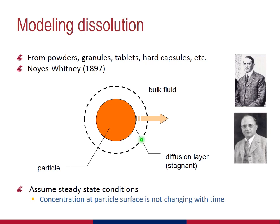the concentration in the diffusion layer is not changing with respect to time, and is therefore sometimes called a stagnant layer.